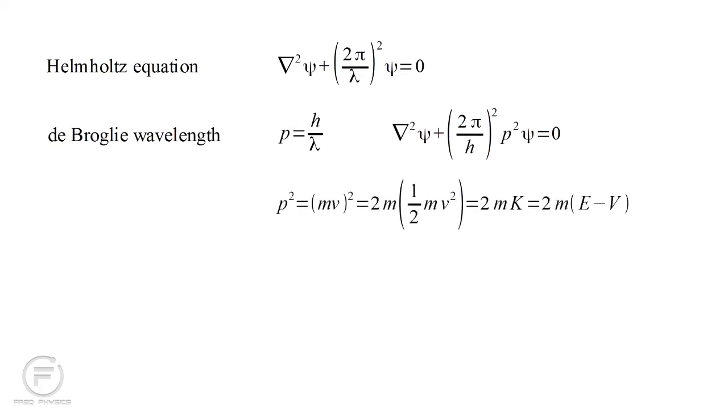Now momentum p squared equals m v squared. And we can write this as two m times one half m v squared. This second quantity is just the kinetic energy of the electron, k. So we have p squared equals 2m k.